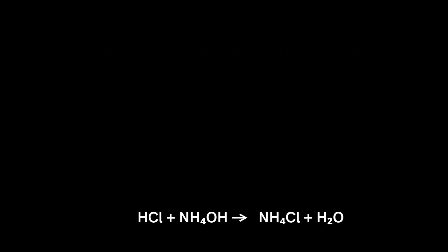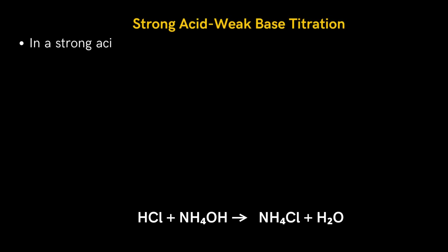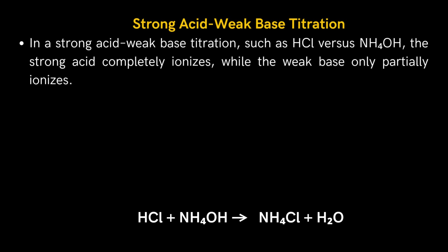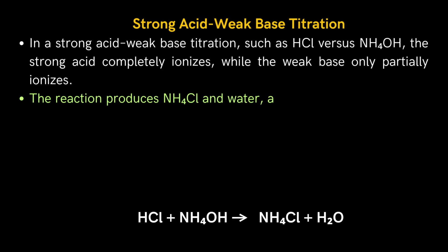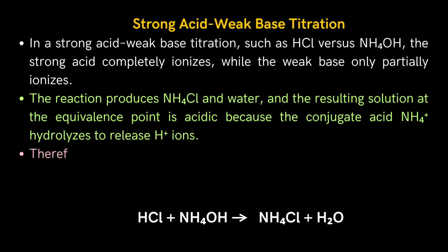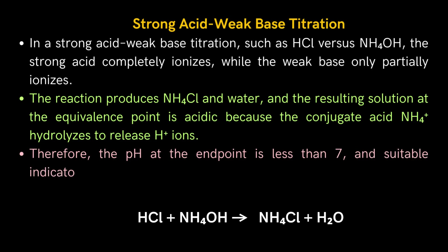Another type of titration is strong acid with weak base, where a different indicator is used. In a strong acid–weak base titration, such as HCl versus NH4OH, the strong acid completely ionizes while the weak base only partially ionizes. The reaction produces NH4Cl in water, and the resulting solution at the equivalence point is acidic because the conjugate acid ammonium ion hydrolyzes to release hydrogen ions. Therefore, the pH at the endpoint is less than 7, and suitable indicators like methyl orange or methyl red are used since they change color in the acidic range.